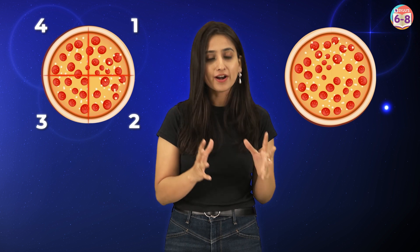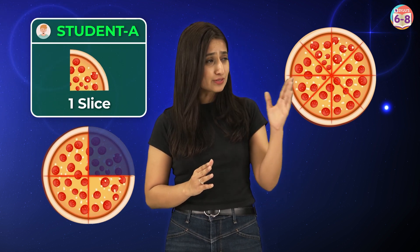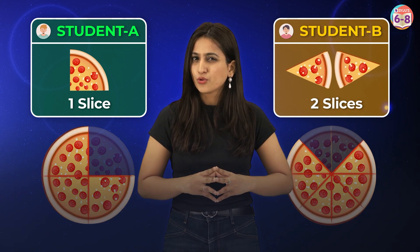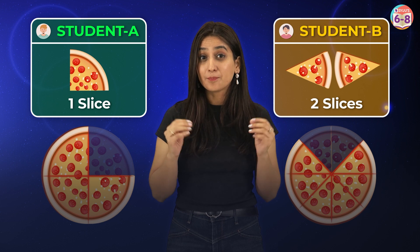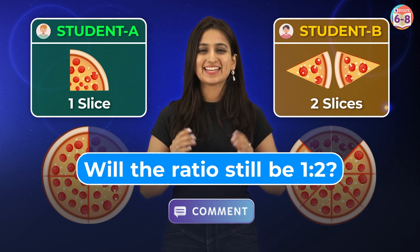Here's something for you to do. If I take two pizzas of the same size and cut them into 4 and 8 slices respectively, then give one slice from the 4-slice pizza to student A and two slices from the 8-slice pizza to student B — would the ratio of the pizza eaten by both still be 1 is to 2? Comment below and stay tuned.